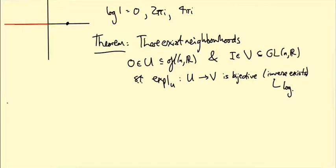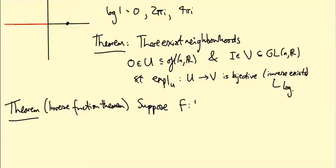I'll state the theorem, and then I'll explain how to use the inverse function theorem to prove the theorem we want about the logarithm, but I won't prove this inverse function theorem. The inverse function theorem says, suppose F from R^N to R^N, don't want to confuse this N with the little n before, is a differentiable map such that its derivative at the origin is invertible.